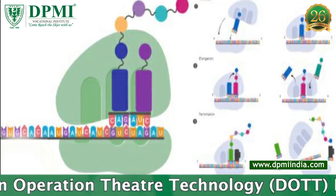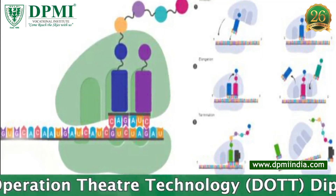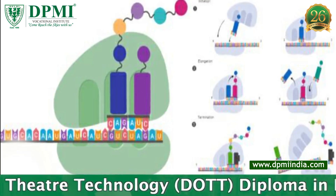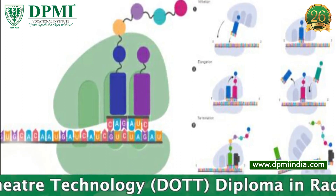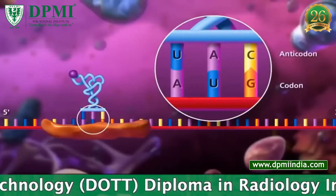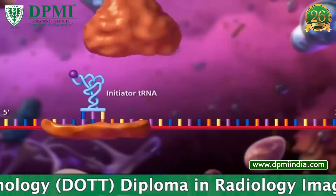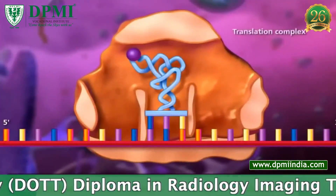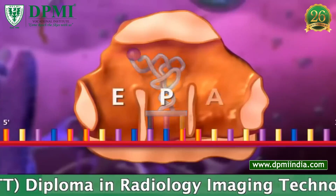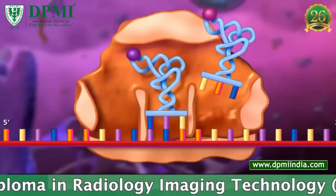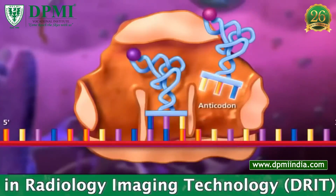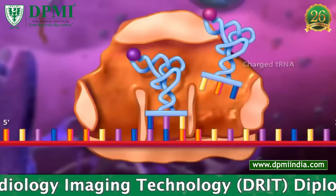Translation takes place in the ribosome, which leads to the synthesis of proteins. In translation, the information in mRNA is read and tRNA brings the correct sequence of amino acids to the ribosome. Then rRNA helps formation of bonds between the amino acids.